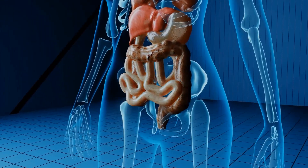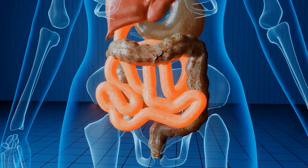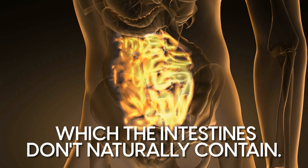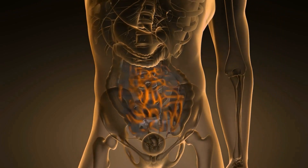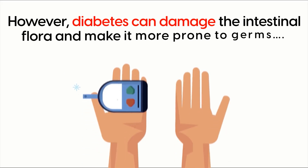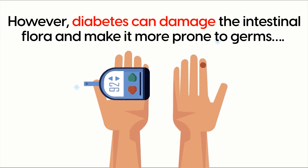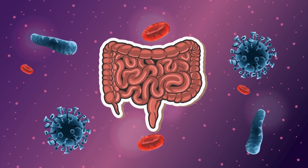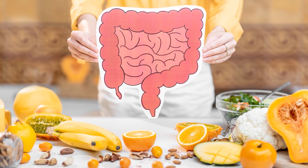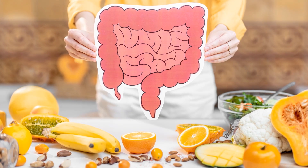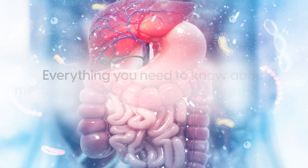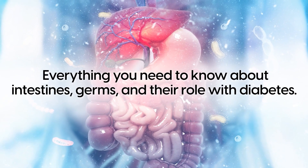Overall, the intestines and the gut in general are vital parts of the digestive process. The term germs is used to define bad bacteria, which the intestines don't naturally contain. Instead, their flora is filled with healthy and neutral bacteria. However, diabetes can damage the intestinal flora and make it more prone to germs. In the same way, poor gut health can trigger diabetes complications. Keeping your intestines healthy will ultimately come down to a healthy and nutrient-rich diet. So there you have it — everything you need to know about intestines, germs, and their role with diabetes.